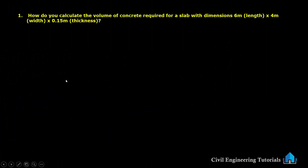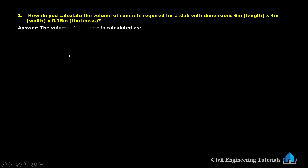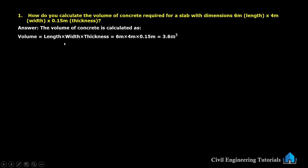The first question: how do you calculate the volume of concrete required for a slab with dimensions 6 meter length, 4 meter width and 0.15 meter thickness? The volume of concrete is calculated as length × width × thickness: 6 × 4 × 0.15, giving us 3.6 cubic meters.